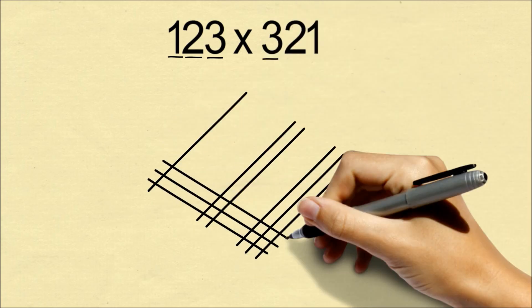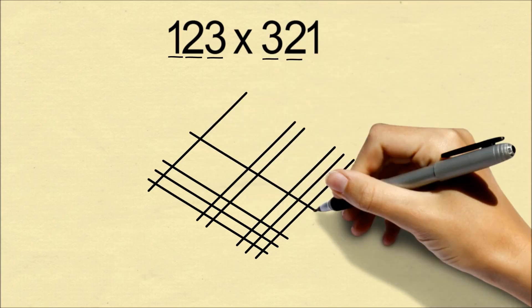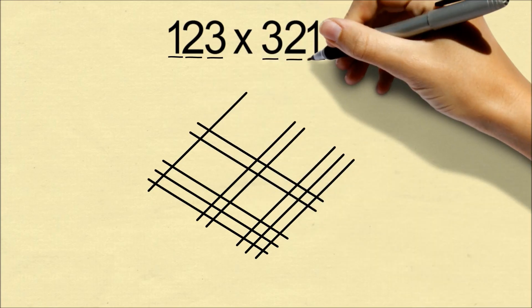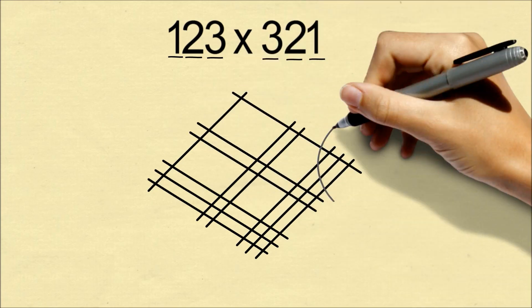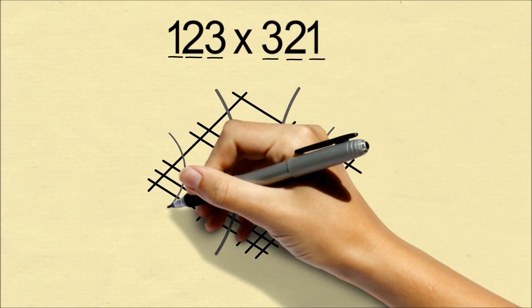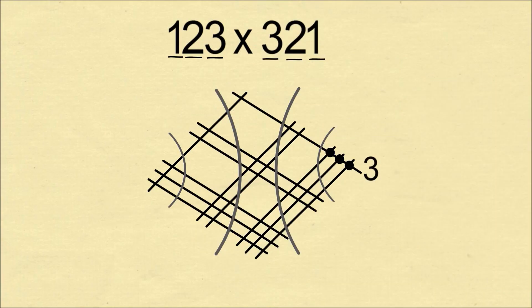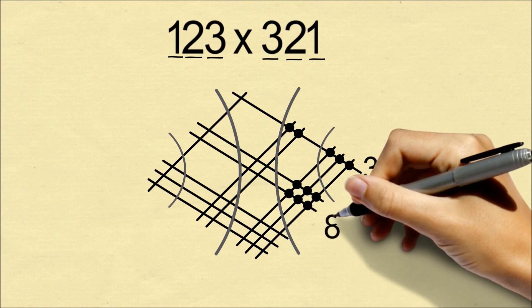For the other number, we will draw lines in the opposite direction, making sure to leave space between the lines for each digit. Now we will group intersections that are vertically aligned, and then count the number of intersections in each group.